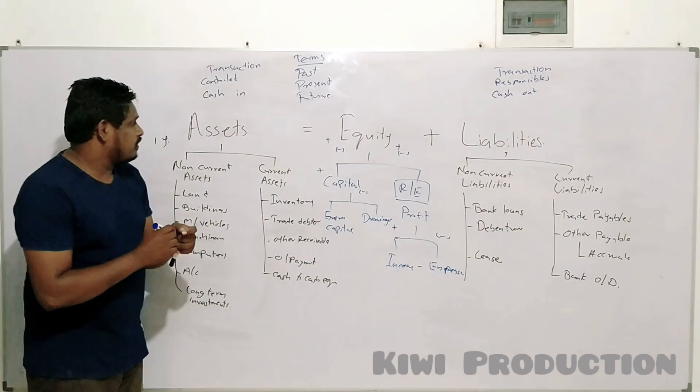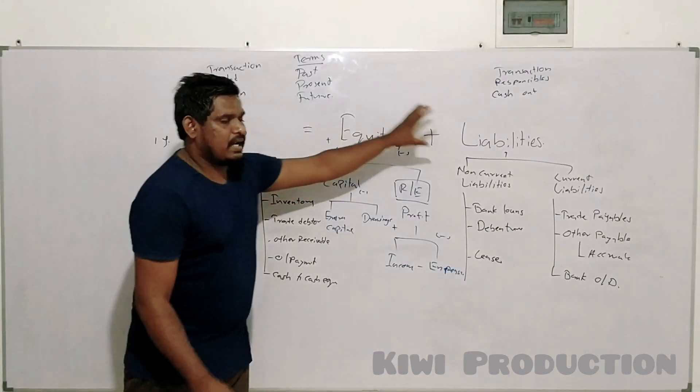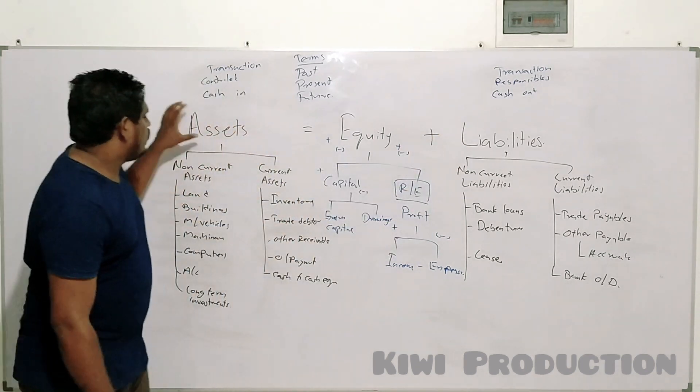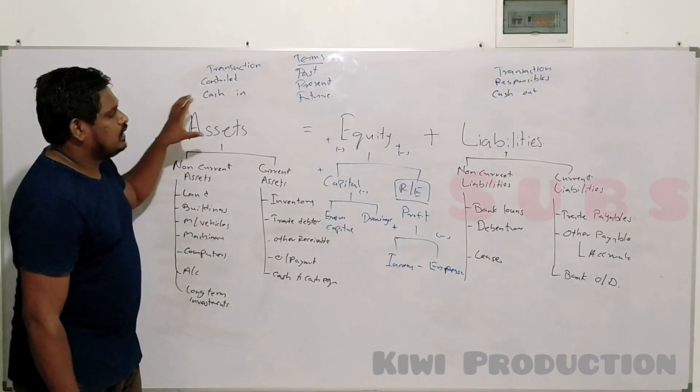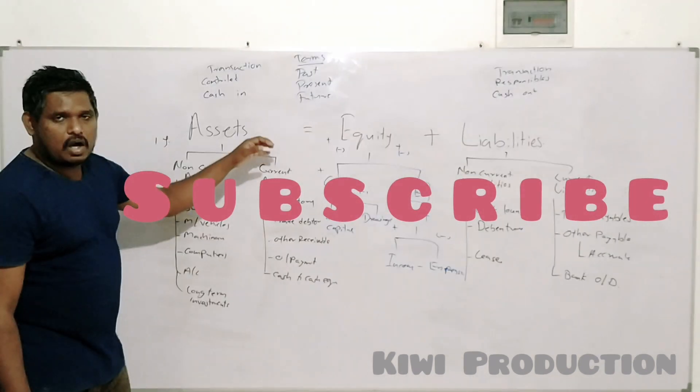That covers assets, equity, and liabilities. Now you know how to identify assets, equity, and liabilities in the accounting equation.